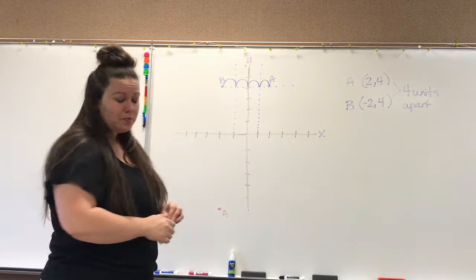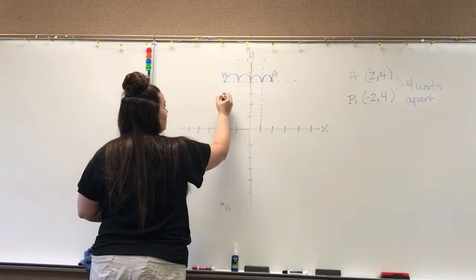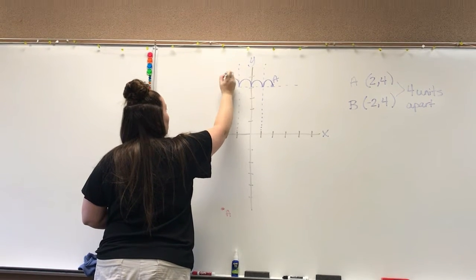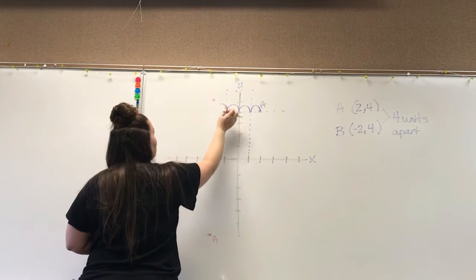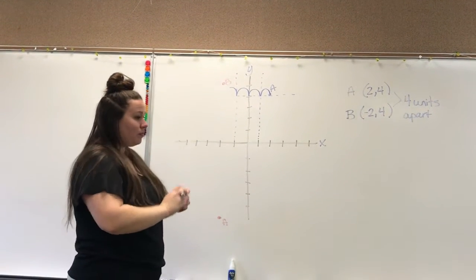And negative 2 comma 5. Negative 2 comma 5: one, two, three, four, five, which is all the way up here. I'm going to get rid of my blue, I don't want it to be distracting.